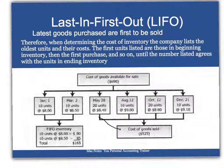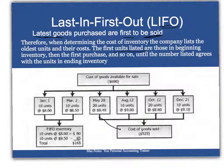Now the other method of putting a value on the ending inventory and hence the cost of goods sold is called the last in, first out method. They assume that the last goods purchased were the first to be sold. Therefore, the ending inventory consists of the first units listed — beginning inventory, then the first purchase, and so on.